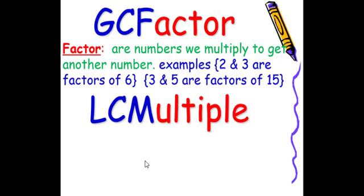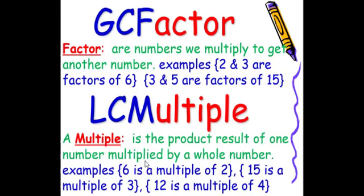The least common multiple: the definition for a multiple is the product result of one number multiplied by a whole number. For example, 6 is a multiple of 2 because we can multiply 2 times 3 to get 6. 15 is a multiple of 3 because we can multiply 3 times 5 to get 15. 12 is a multiple of 4 because 4 times 3 is 12.